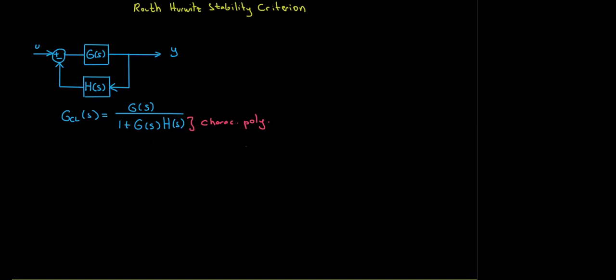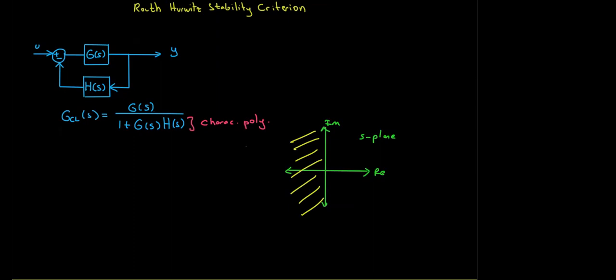We want the roots of the characteristic polynomial to be on the open left half plane. If you plot the s-plane with real and imaginary axes, we want our roots over here on the left. I say open left half plane because the j-omega axis is not included — there should be no roots on the j-omega axis. All poles should have negative real parts.